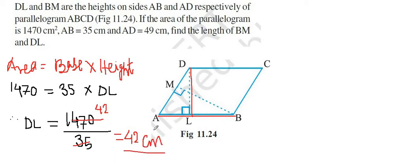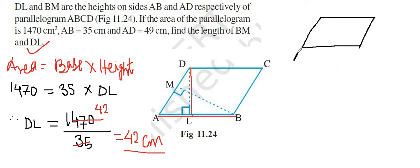Now we have found the length of DL. Next, we have to find the length of BM, which is the perpendicular from B to AD. We can redraw this parallelogram — here A, B, C, and D — and this time we are going to take AD as the base.